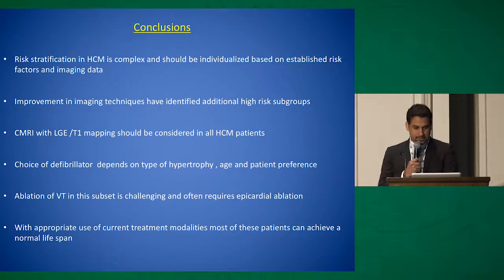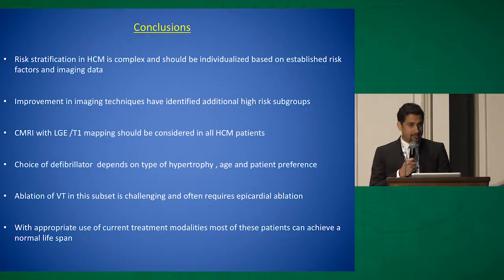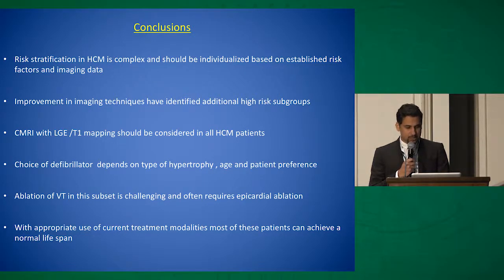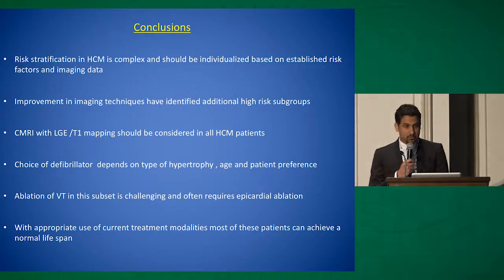In conclusion: risk stratification is complex and should be individualized. Improvement in imaging techniques have identified additional high-risk subgroups. Cardiac MRI with late gadolinium enhancement and T1 mapping should be considered in all hypertrophic cardiomyopathy patients. Choice of defibrillator depends on type of hypertrophy, age of the patient, and their preference. Ablation of VT in this subset is challenging and would often require an epicardial approach. With appropriate use of current treatment modalities, most of these patients can achieve a normal lifespan.